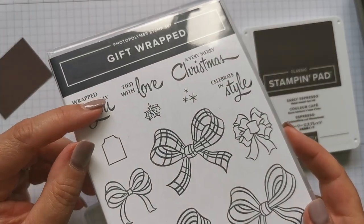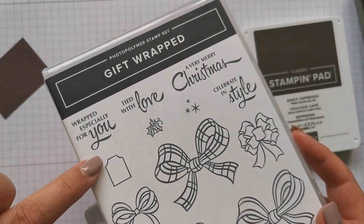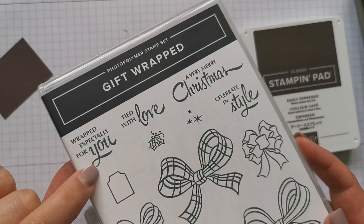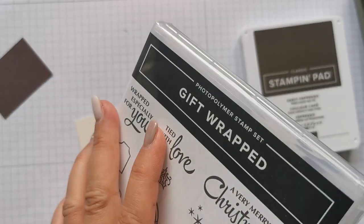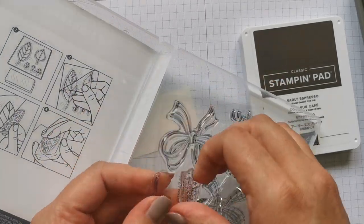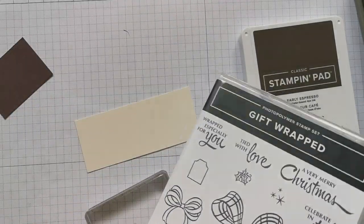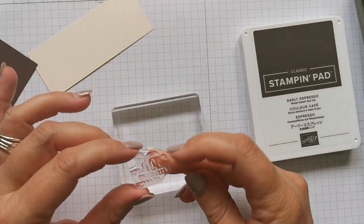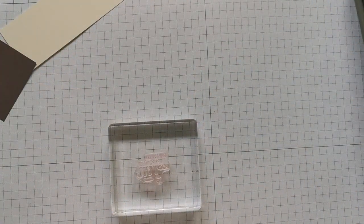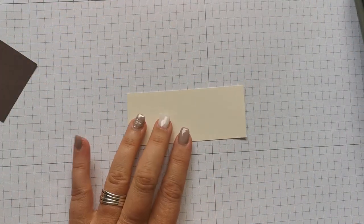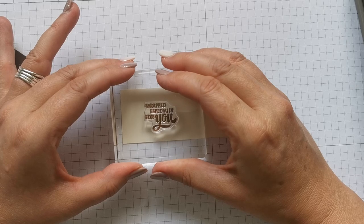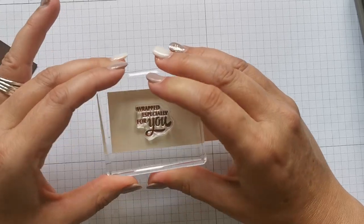So I'm using the Gift Wrapped stamp. This comes from the new August to December catalogue, which goes live on the 4th of August. And I'm going to use this one just because I really like that because it's not necessarily for Christmas. It can be for anything. You don't need an excuse to send a gift to each other. So put that on my block and then I'm just going to stamp this onto some very vanilla in Early Espresso, but your coloring would depend on what DSP you're using.